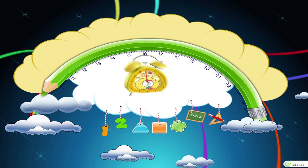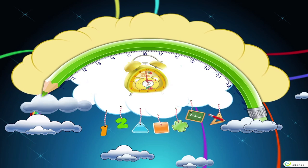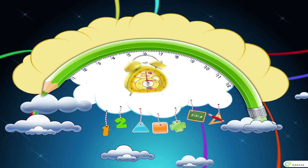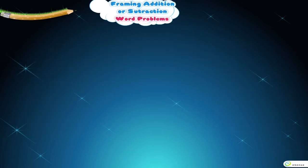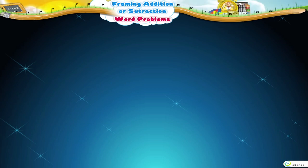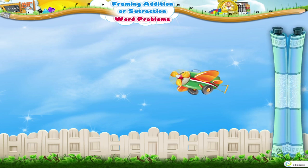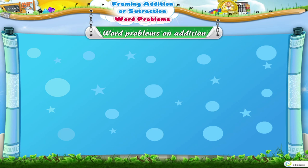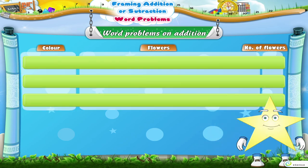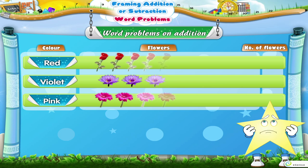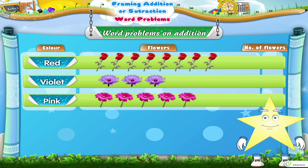Framing Addition or Subtraction Word Problems. Hi, Starry. Oh, you have made such a colorful chart. Come, let us look at the chart and frame some questions. Tell me the number of red, violet and pink flowers, Starry.